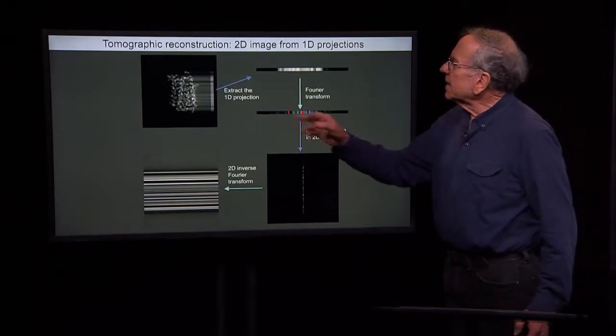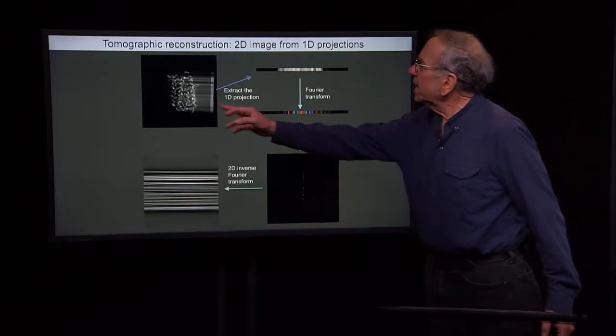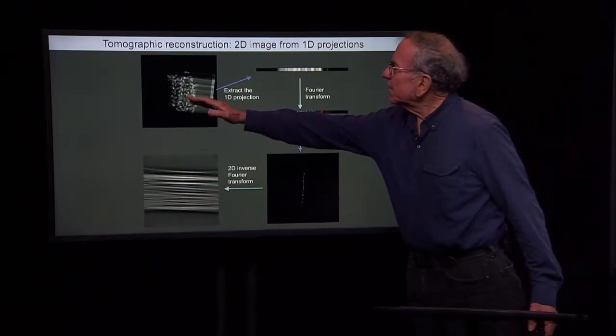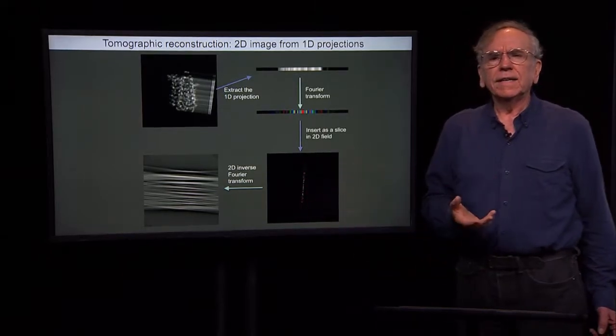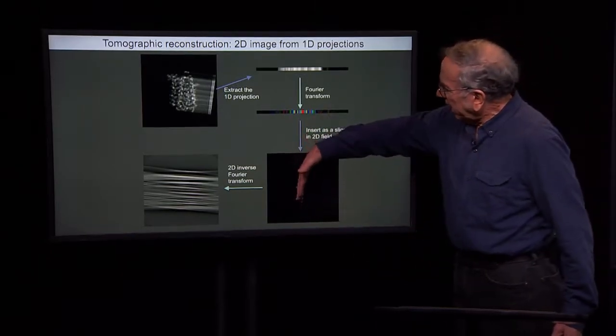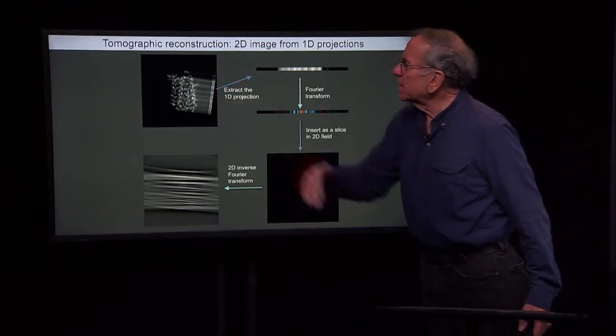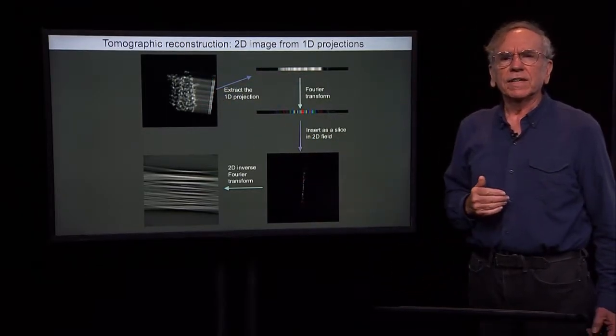And so the idea is that if we obtain projections in different directions, we can fill in different slices in the Fourier transform with the angle of the slice corresponding to the angle at which the projection is taken.